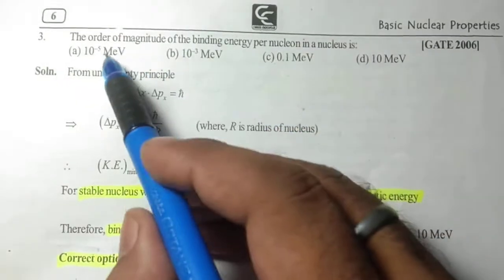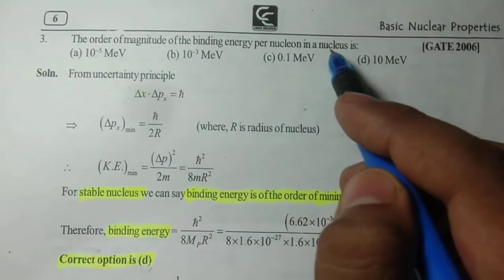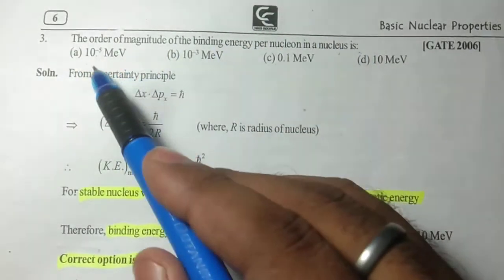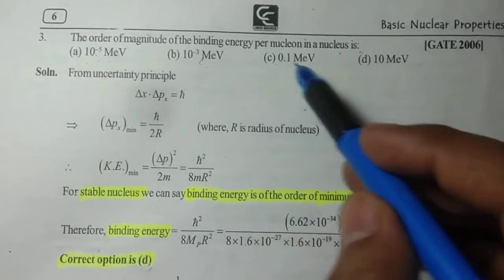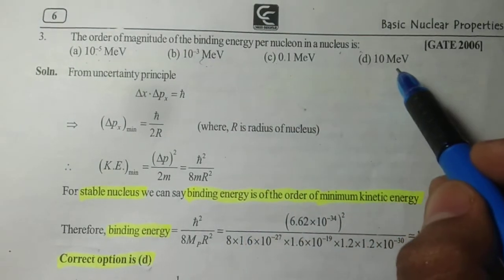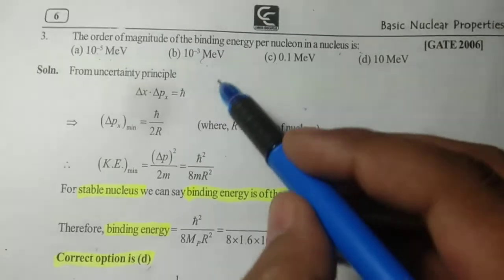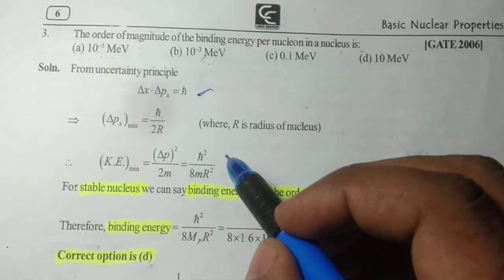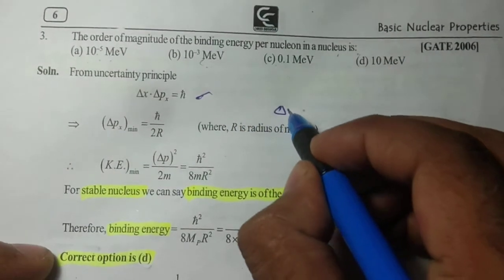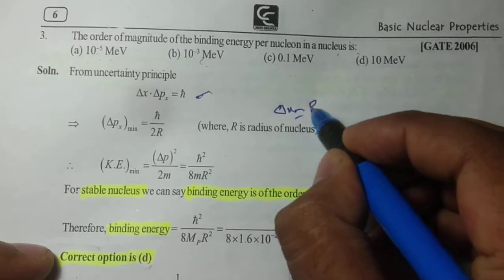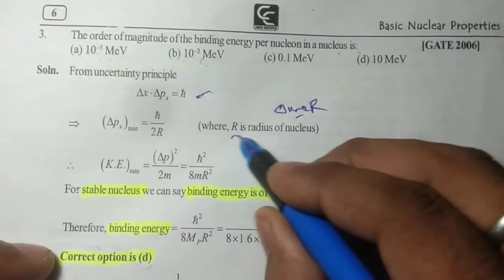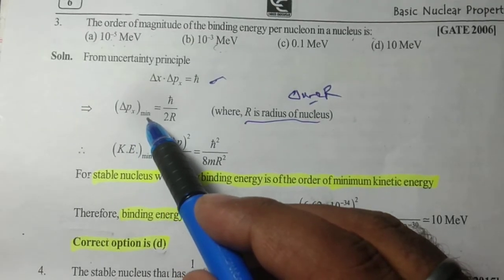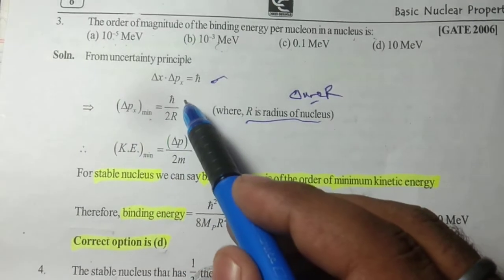The next question: the order of magnitude of binding energy per nucleon in a nucleus is 10 to the power minus 5, 10 to the power minus 3, 0.1, or 10 MeV. From the uncertainty principle, delta x times delta p equals h bar. Here delta x equals 2R, where R is the radius of nucleus. So delta p minimum equals h bar upon 2R.